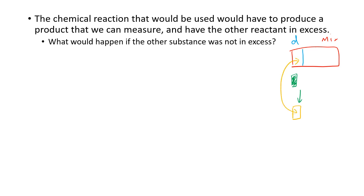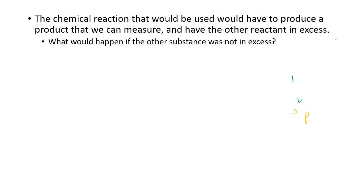If we have excess of the other material, some of it will react, and all of the desired material will react to make all of this amount of product. Therefore, we can use the amount of desired product to work out how much there is of the desired material.